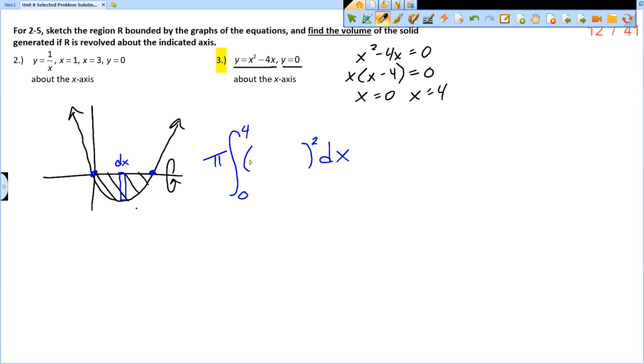And we're going to integrate from left to right. And so we're integrating from zero to four. Now, the radius, remember, is the height of the dx. So we take the upper boundary of the dx minus the lower boundary of the dx, which would be x squared minus 4x. So that's our setup. But now this one actually says to find the volume. So we actually have to carry this out.